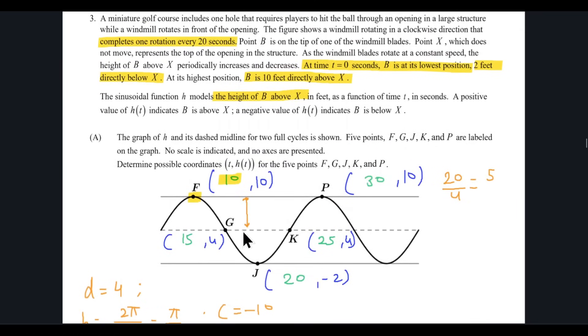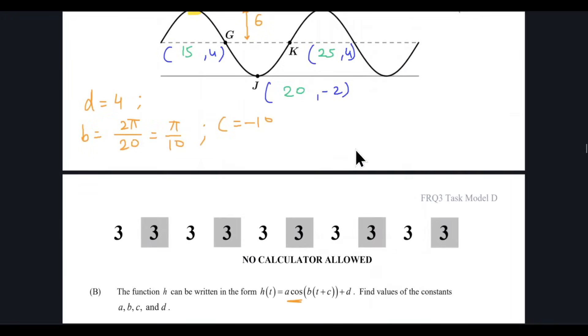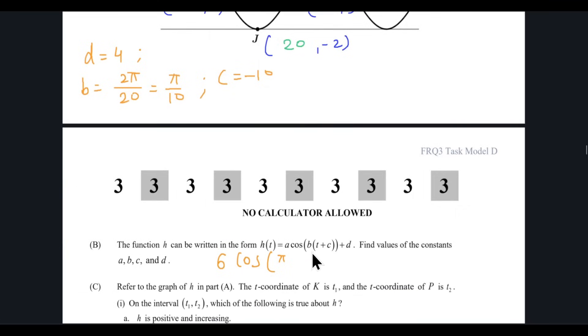And the value of A is definitely positive. And the amplitude, as we can see, the difference between 4 and 10 is 6 units. So our equation is going to look like 6 cosine of pi over 10 times D minus 10 plus 4. This is our equation.